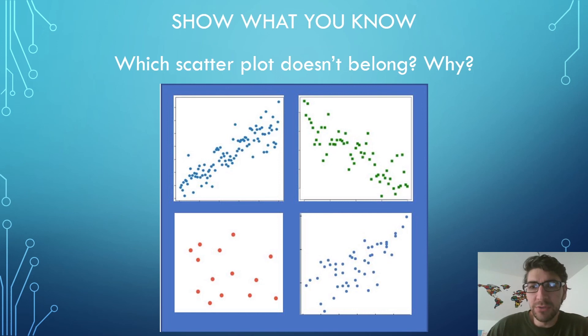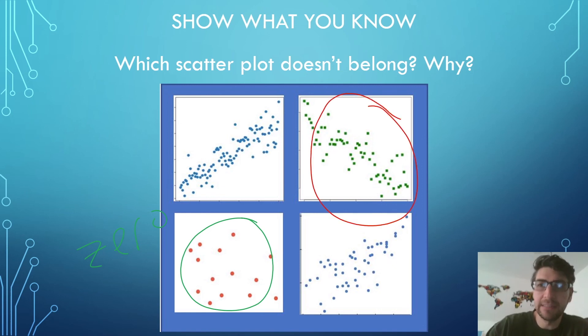Which one did you choose? Maybe you chose the one in the bottom left because this one is the only one that has zero correlation. Or maybe you picked the one in the top right. This is the only one that has a negative correlation. Well, did you pick one of the other ones? How come? Can you justify your answer?